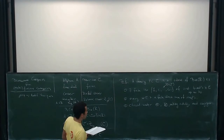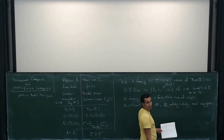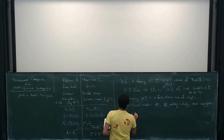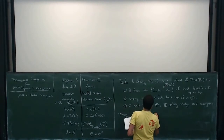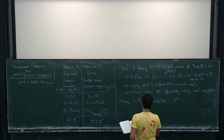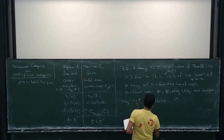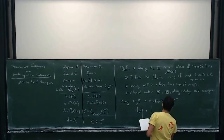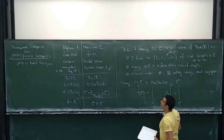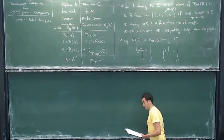In particular, every c in C is dualizable. So c comes with a dual c-dual and canonical maps: from c box-times c-dual to the identity, and similarly in the other direction. Any questions about our definition of unitary fusion category? Great.